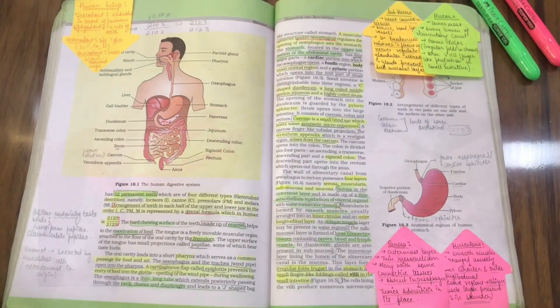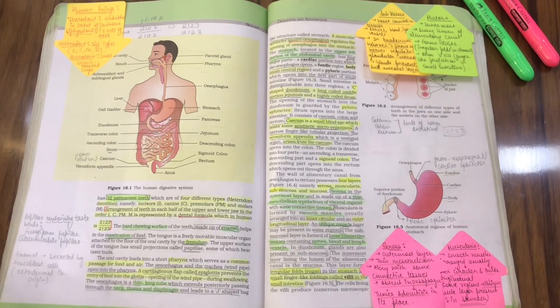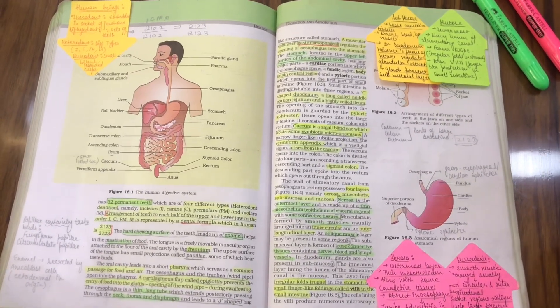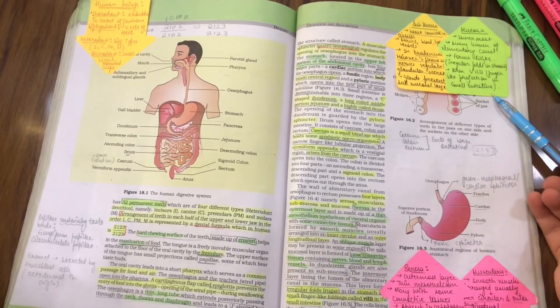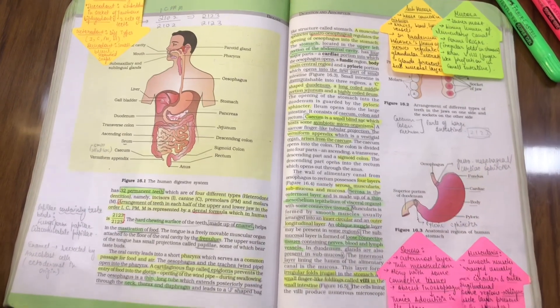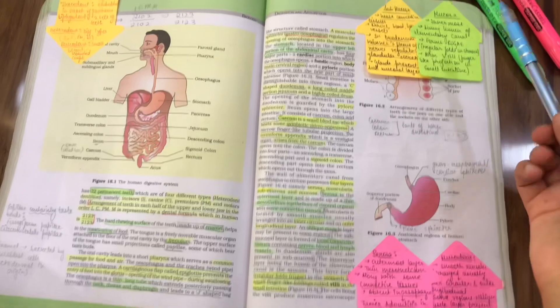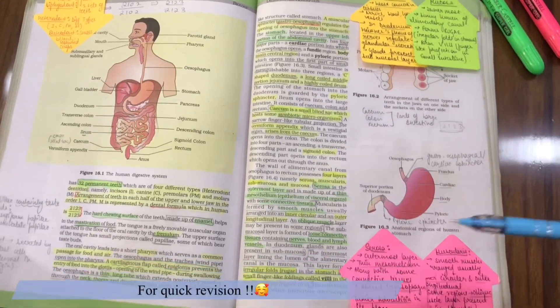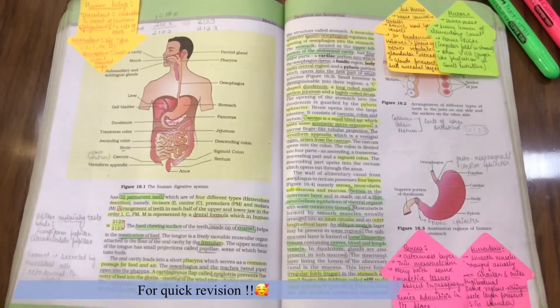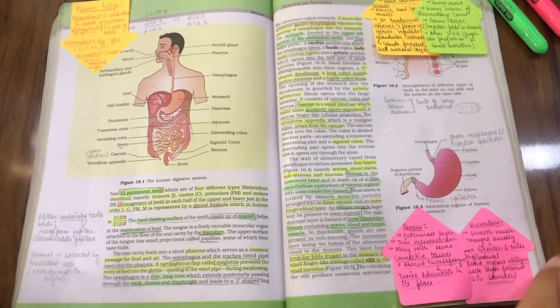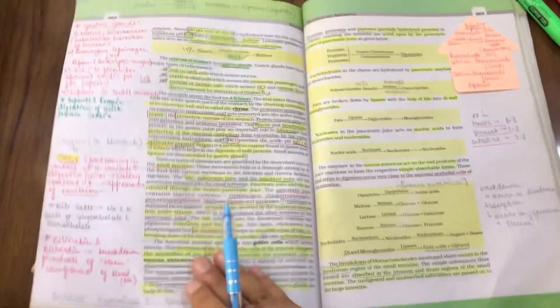Another way I write things in NCERT is using sticky notes. Whenever I read a paragraph and I find some important points and the points that I can forget, I quickly write it down on these notes and then stick it on. It is more appealing this way and I find it interesting to read it again and again.